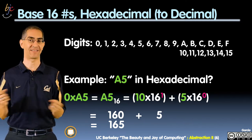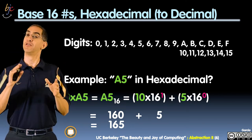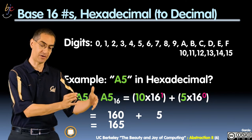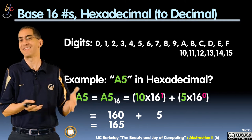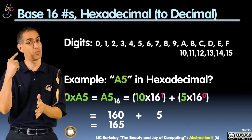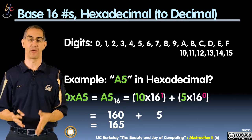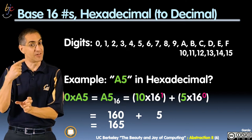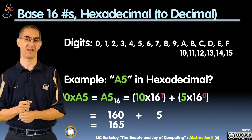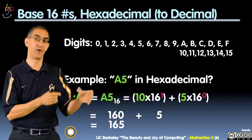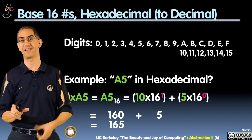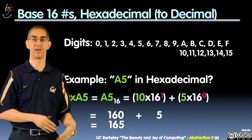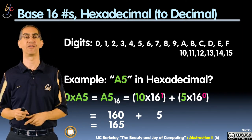So what's A5 in hexadecimal? Same exact idea — there are columns. The rightmost column is sixteen to the zero, the ones column. The next is sixteen to the one, which is just sixteen. So I have the sixteens column and the ones column. A is ten, so ten times sixteen is 160. Five times sixteen to the zero is five. So 160 plus five is 165. You now know how to convert binary digits to a decimal number and hexadecimal digits to a decimal number. In a later video, we'll show you how to do the opposite.